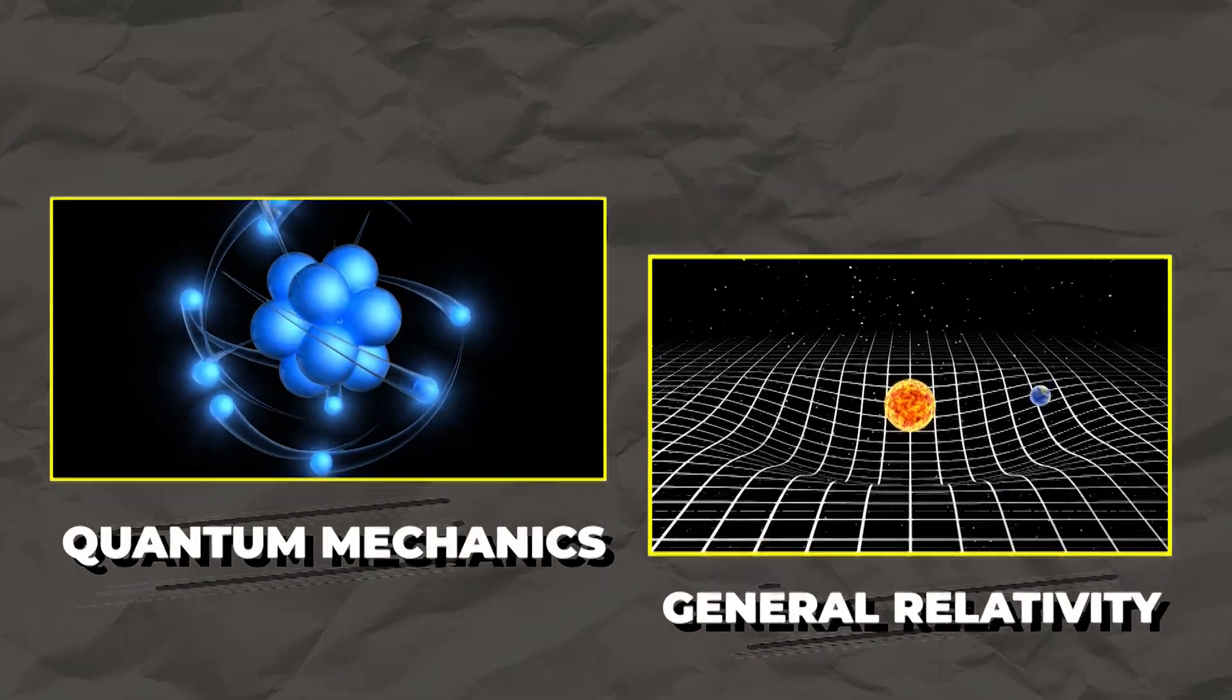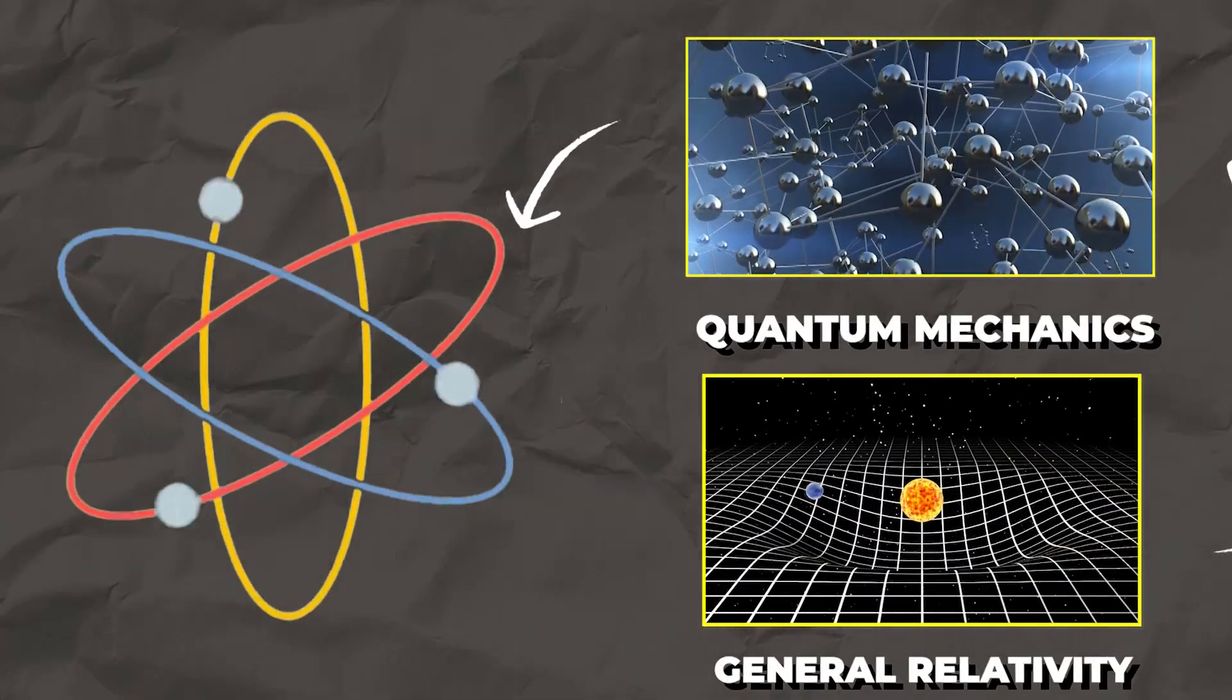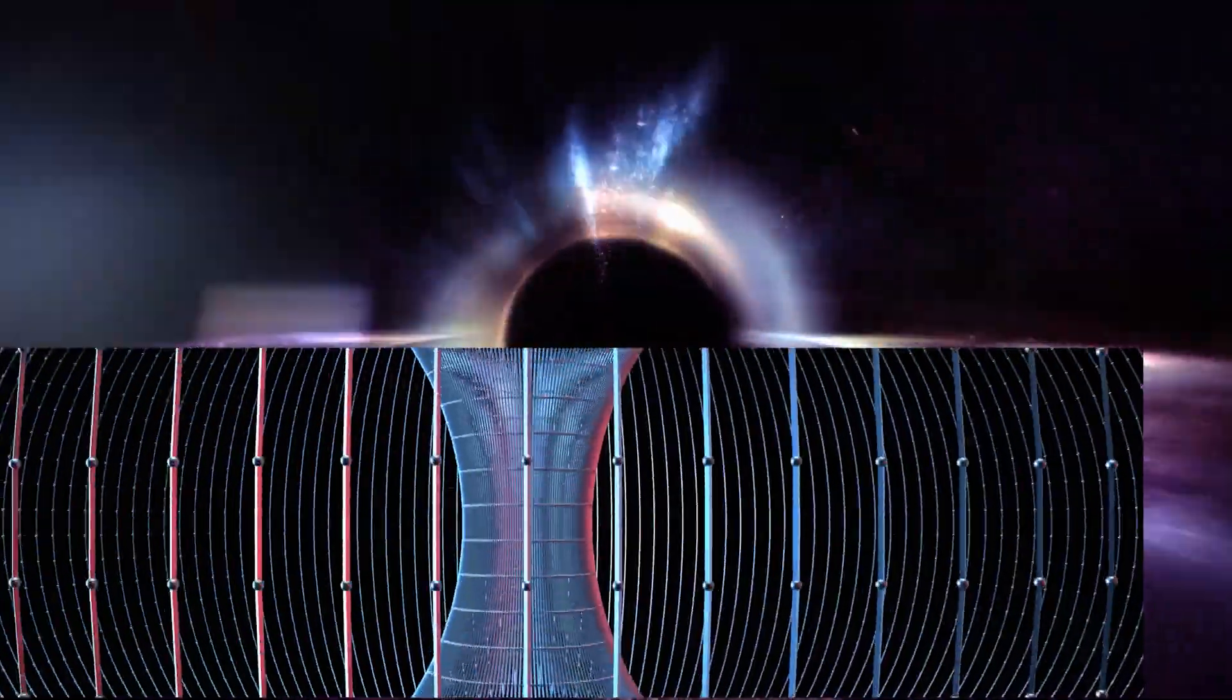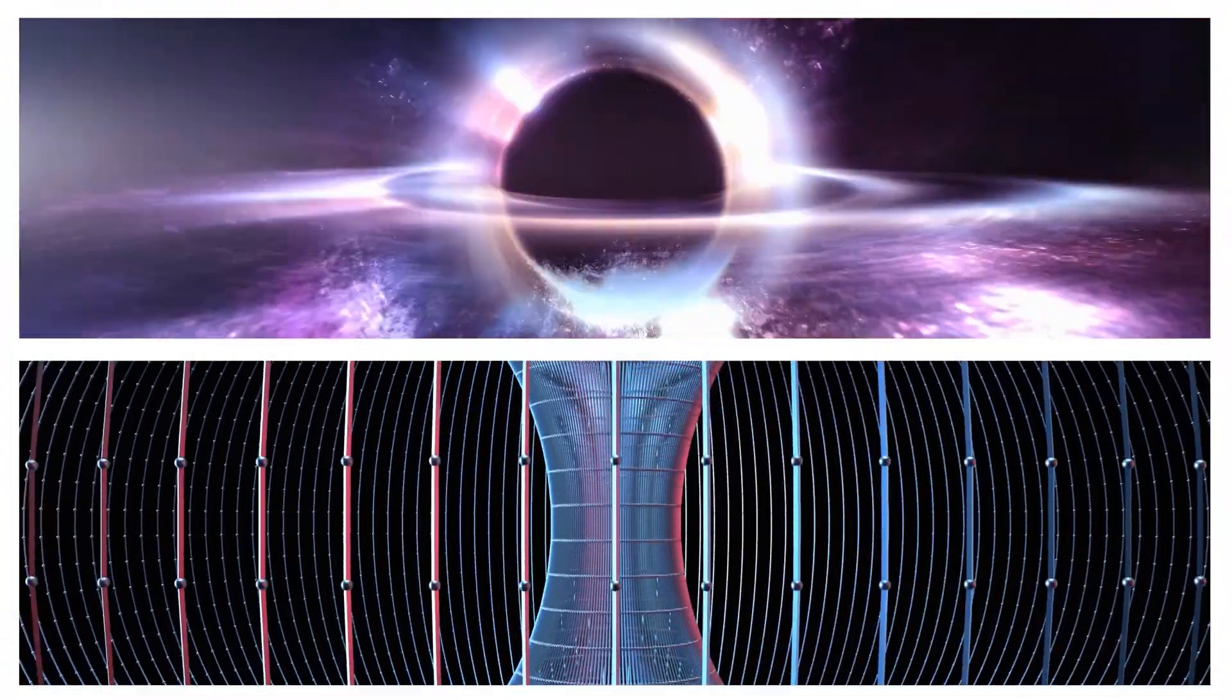Quantum mechanics and general relativity stand as the twin pillars of modern physics, each towering in its own domain of the very small and the immensely large, respectively.